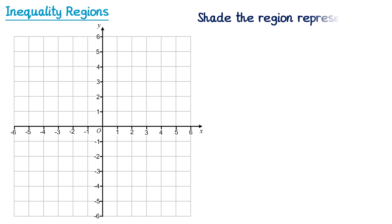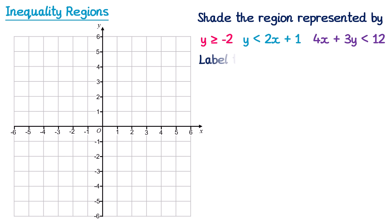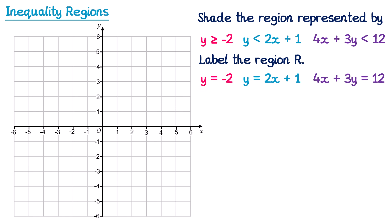An exam question will probably be worded: 'Shade the region represented by the following inequalities and label the region R.' We take each inequality and replace the inequality sign with an equal sign to get the lines to draw. So we need to draw y = −2, y = 2x + 1, and 4x + 3y = 12. For y = −2, that's a horizontal line through −2 on the y-axis, drawn as a solid line since it was ≥. For y = 2x + 1, I'd use a table of values.